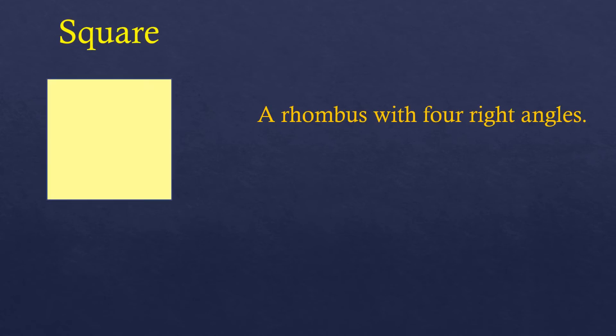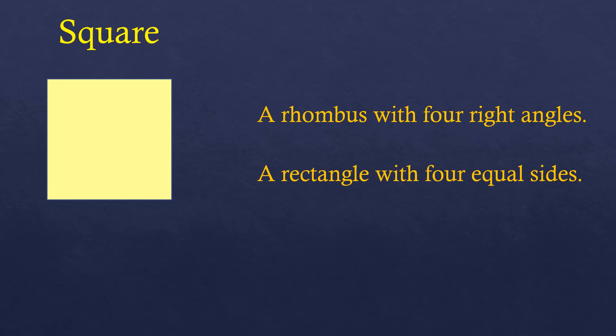Now let's talk about the square. A square is a rhombus with four right angles. Since a rhombus is a parallelogram with four equal sides, a square is also a rhombus with right interior angles. Square is also a rectangle that has four equal sides — a rectangle has four right angles, and in a square the sides are equal. So a square is a combination of a rhombus and a rectangle.